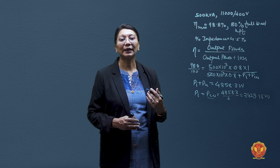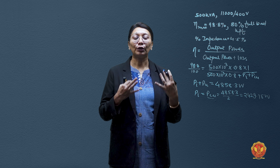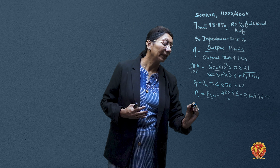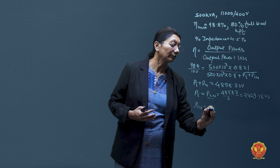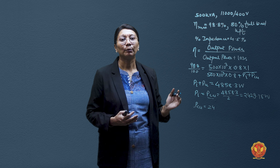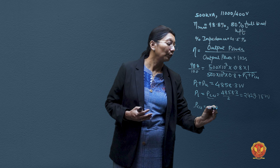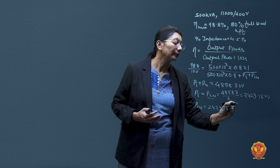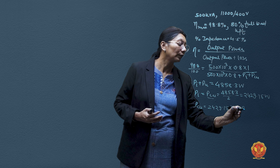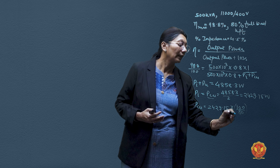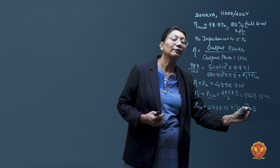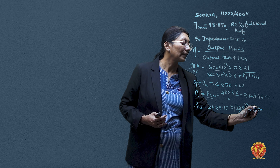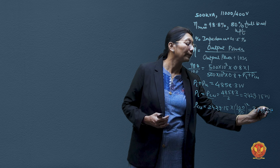The value 2429.15 watts is the copper loss at 80% load. To get the full-load copper loss, we multiply by the factor (1/0.8)², giving: 2429.15 × (1/0.8)² = 3795.55 watts. This is the actual full-load copper loss.